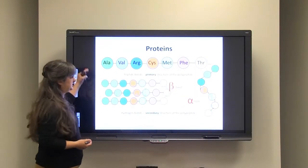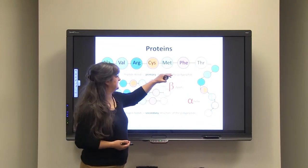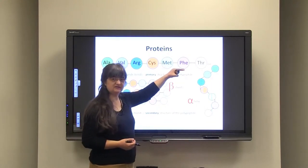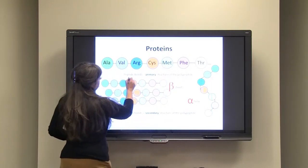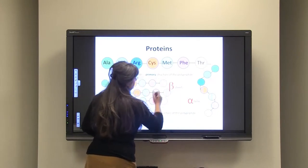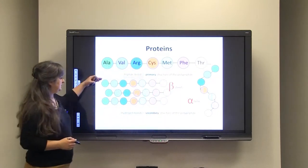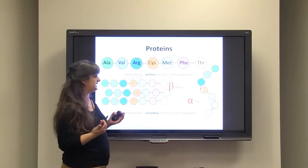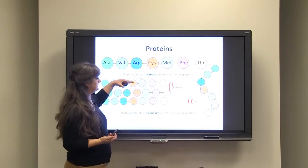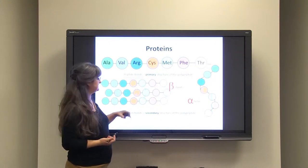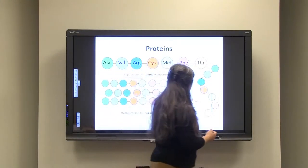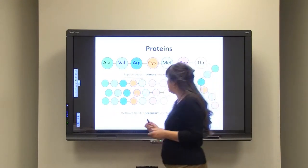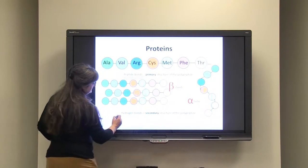Now what we saw there, that is the primary structure. So primary structure of the protein, very important, is only peptide bonds between them. Now when we have many parts of one polypeptide, they can be in the form of beta sheets, or they can form alpha helix. So there are spirals between them.